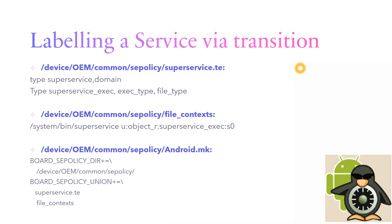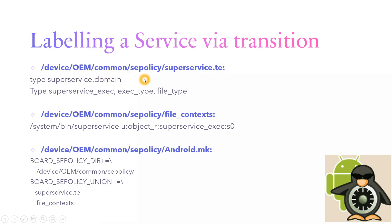Labeling a service via transition: one important thing to note is that when trying to label a service via transition, we have to have two files mandatorily — one is the service.te file where we define our policies, and the other is the file_contexts file. Here I have taken an example of creating a service called super service, placed under device/OEM, your company-specific folder, and common/se_policy.